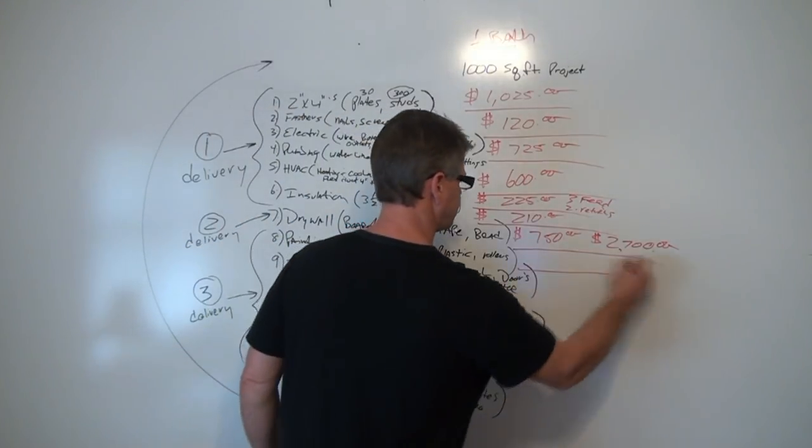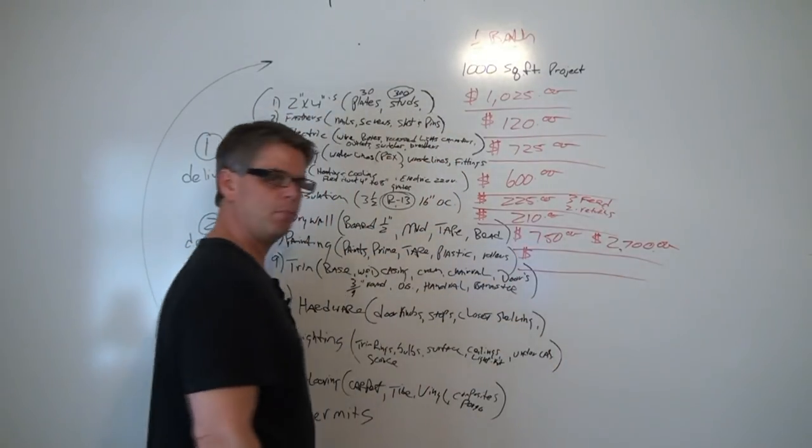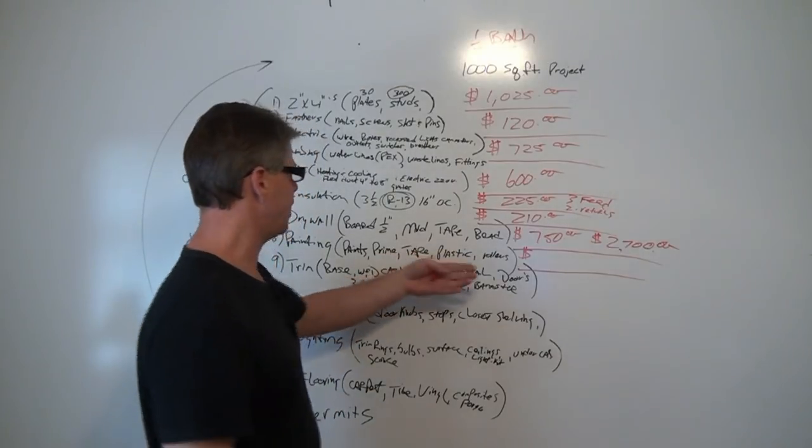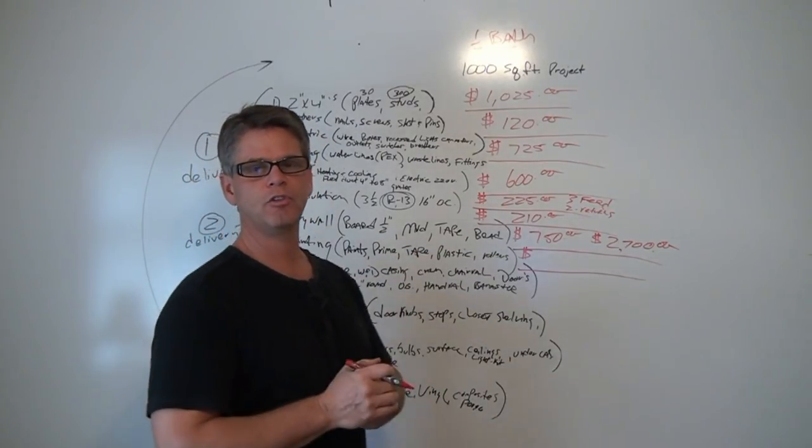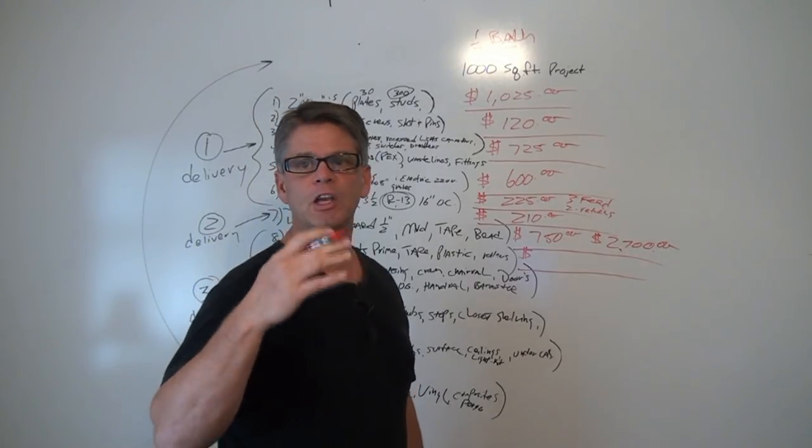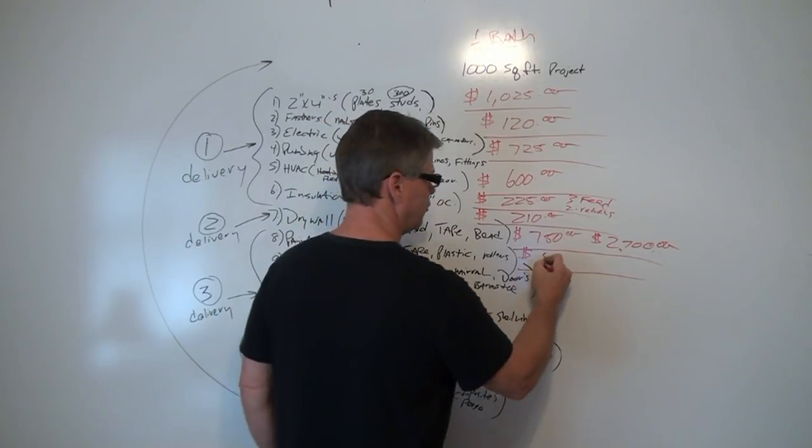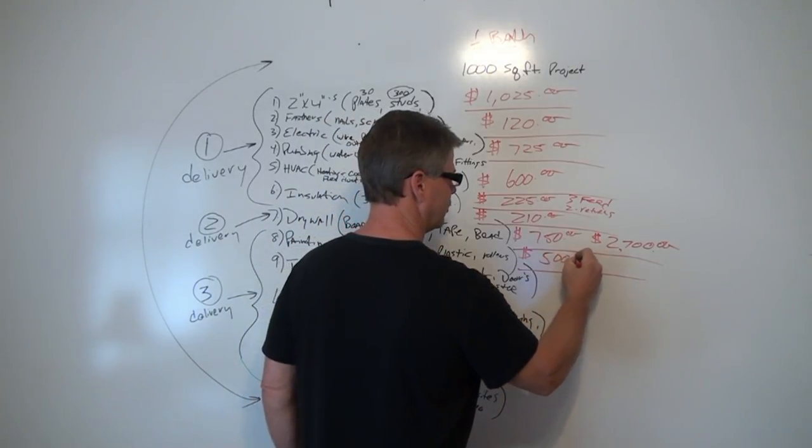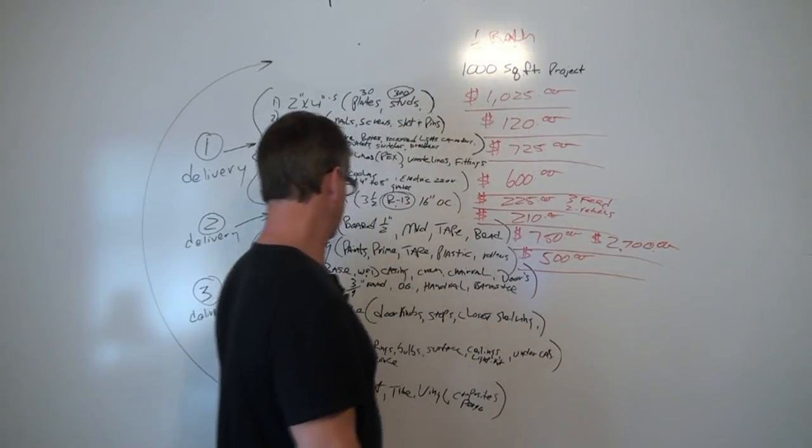Painting is next. That's all of our wall paint, our trim paint, our primer, our tape, our plastic, our rollers, all the accessories that you use for a paint job. And I'm thinking you're going to do your own painting. Average price for me for paint materials is right around $500.